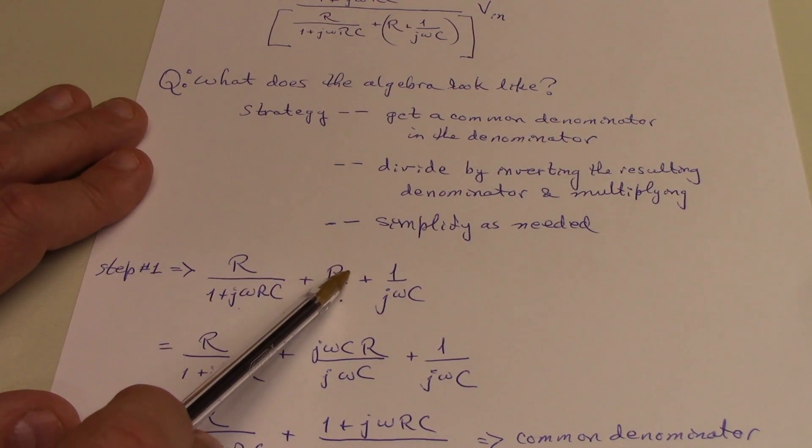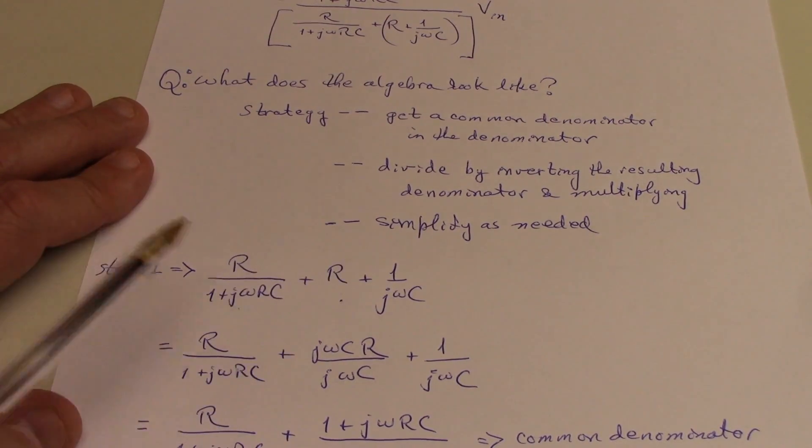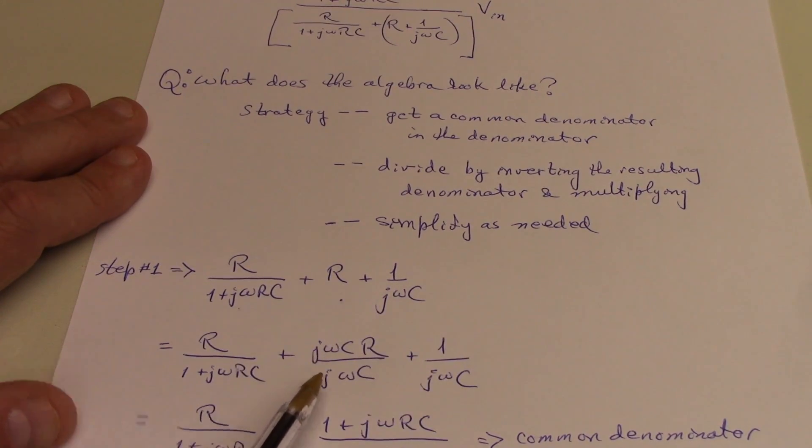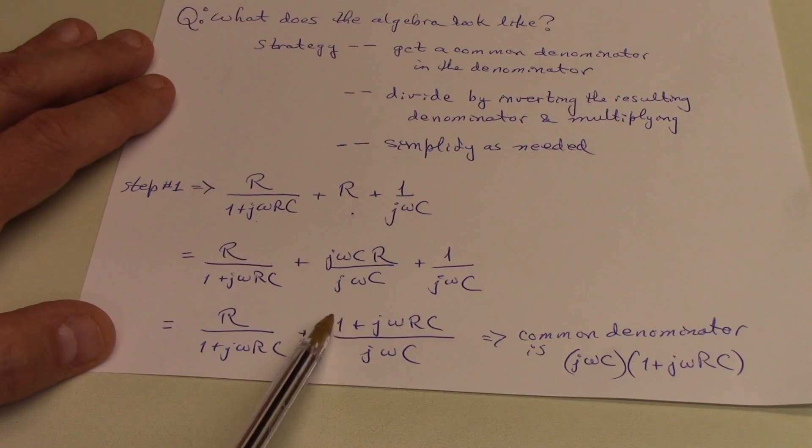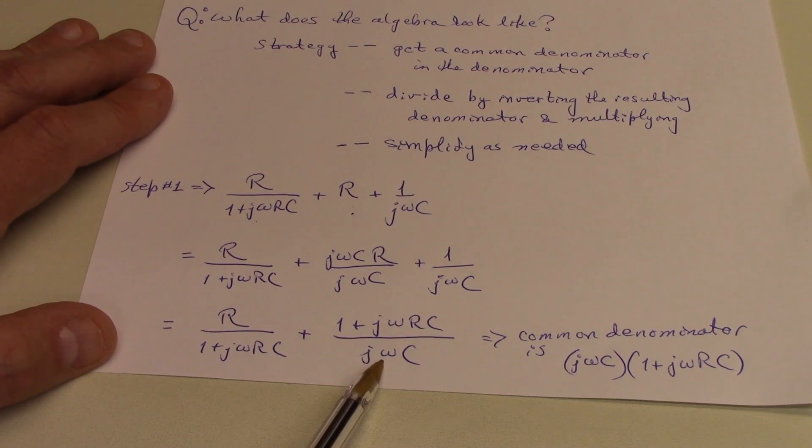So I'm going to multiply this r by 1, but I'm going to write 1 as j omega c over j omega c. When I do that, I can then combine these two terms into 1 plus j omega rc over j omega rc.